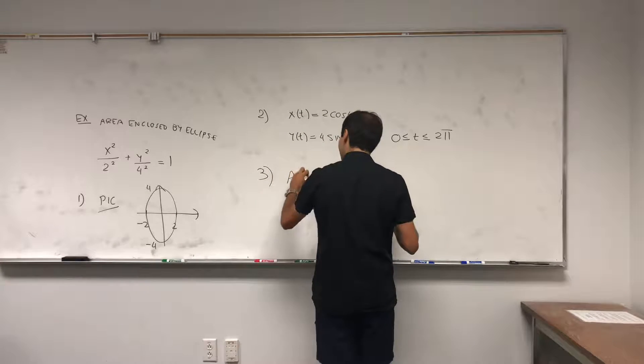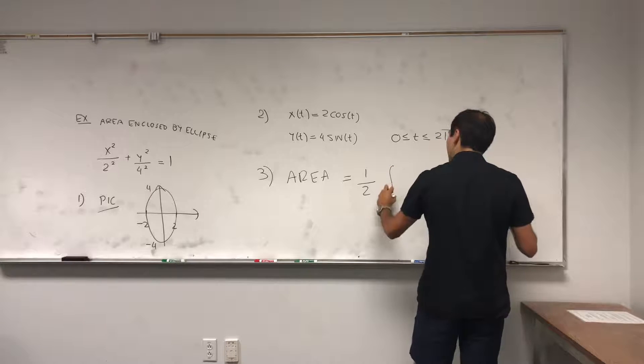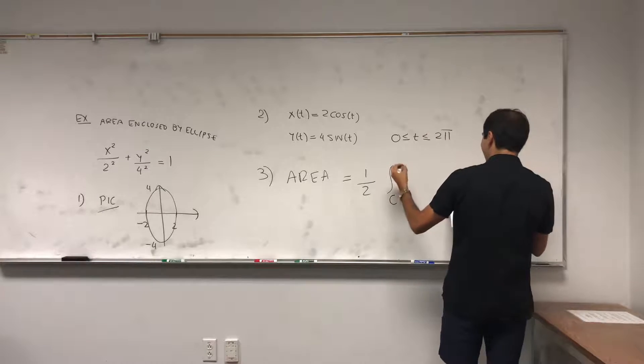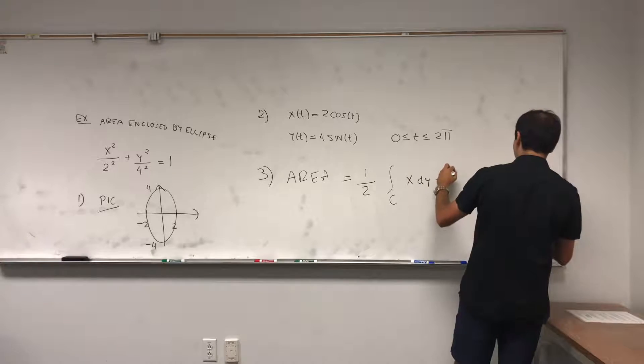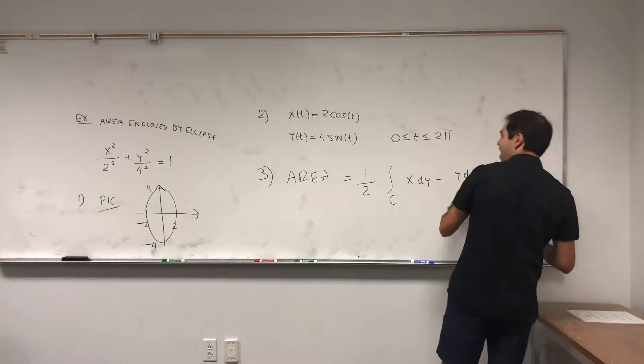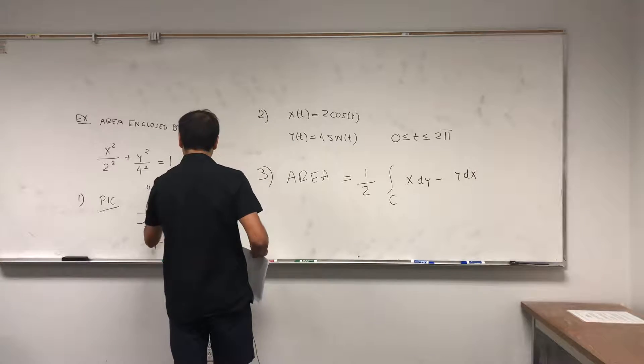And then it turns out there's a nice formula for the area of the ellipse, and I either did that or will do that. It equals one half of the line integral of x dy minus y dx, where c is this curve here.